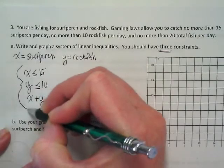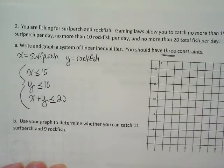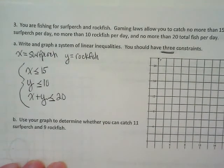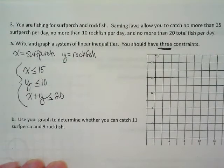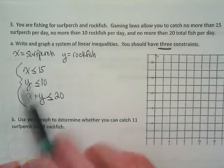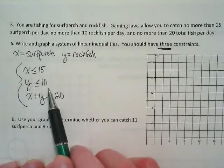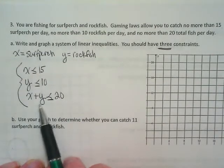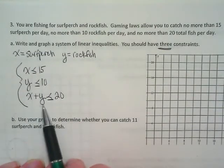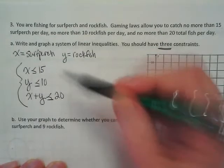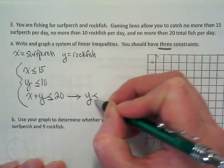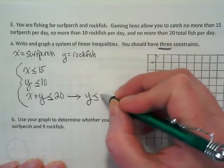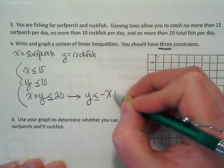This is a system of inequalities. Now before we can graph these, each of them has to be graphable, meaning simplified to one variable. This is simplified to one, this is simplified to one. We need to convert this to just having y to the left of the inequality. So we're going to rewrite this as y is less than or equal to negative x plus 20.